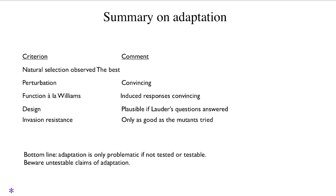In summary: natural selection is the best criterion — if we see it, we know it happened. The perturbation criterion is convincing. The functional criterion of Williams and Curio — seeing the plastic response that only occurs when it's useful — is also convincing. The design criterion is plausible if Lauder's questions can be answered, though they can't always be. The invasion resistance criterion is only as good as the variants tried in any practical case. The bottom line is that adaptation is only problematic if it's not tested or testable, and one should beware untestable claims of adaptation.